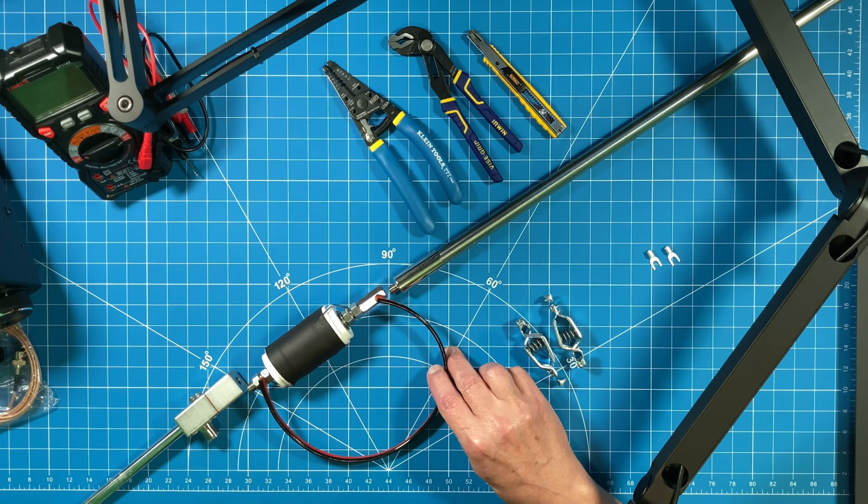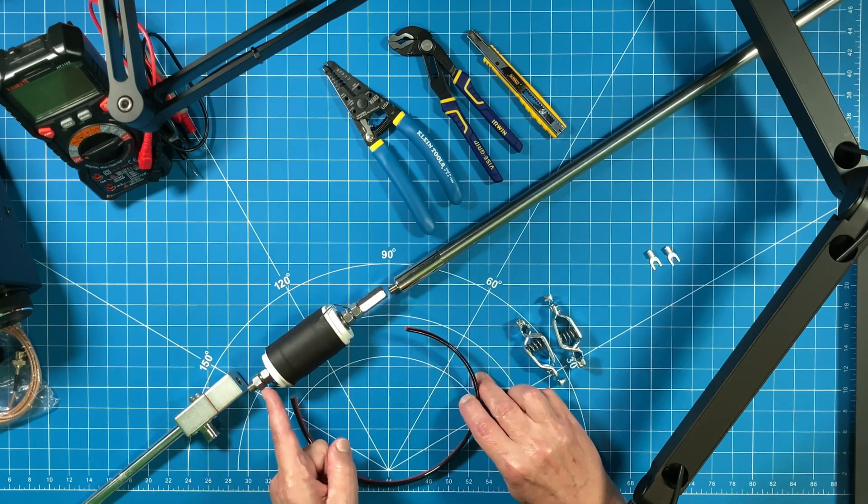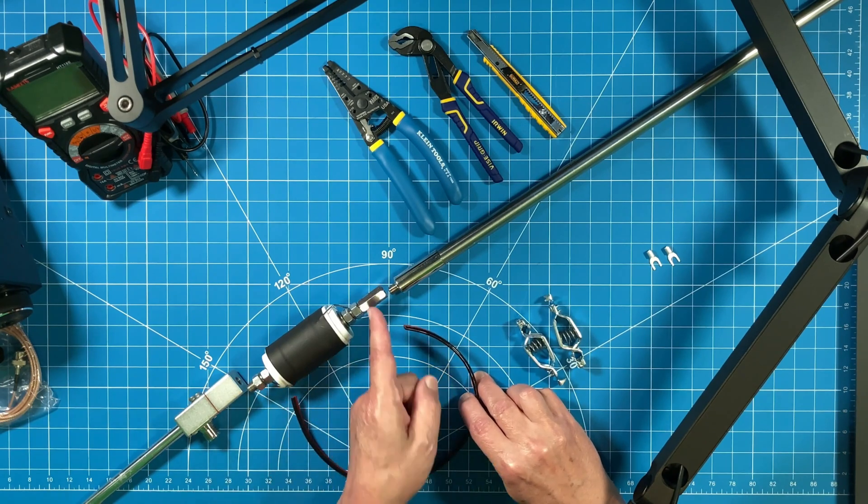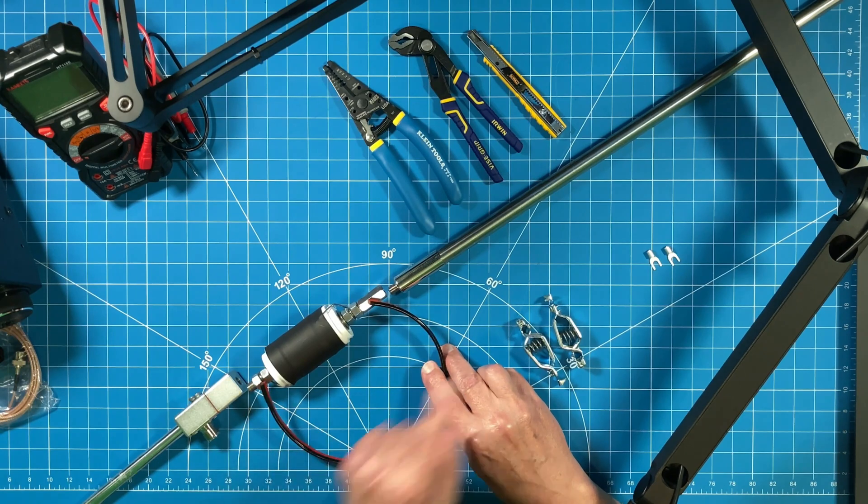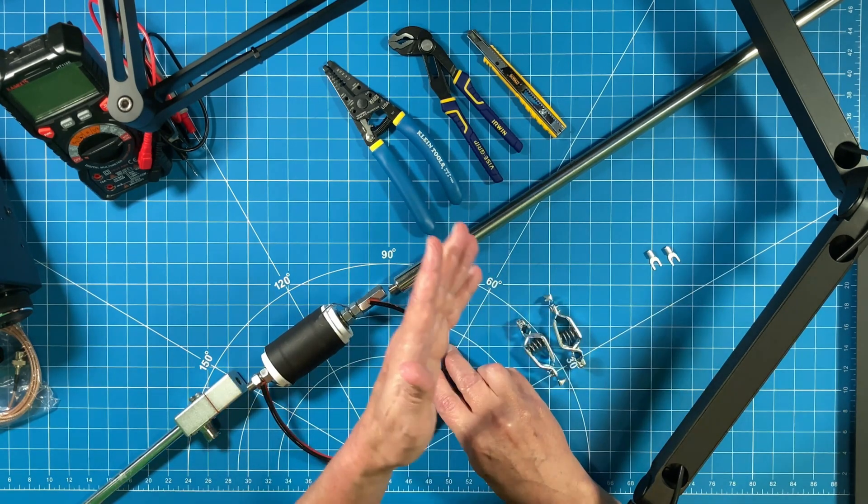So we're going to create a jumper that we can connect to the bottom of the Sporty 40, to the top of the Sporty 40, when we want to go to 20 meters, and then from there we would collapse our whip to get to the higher bands.